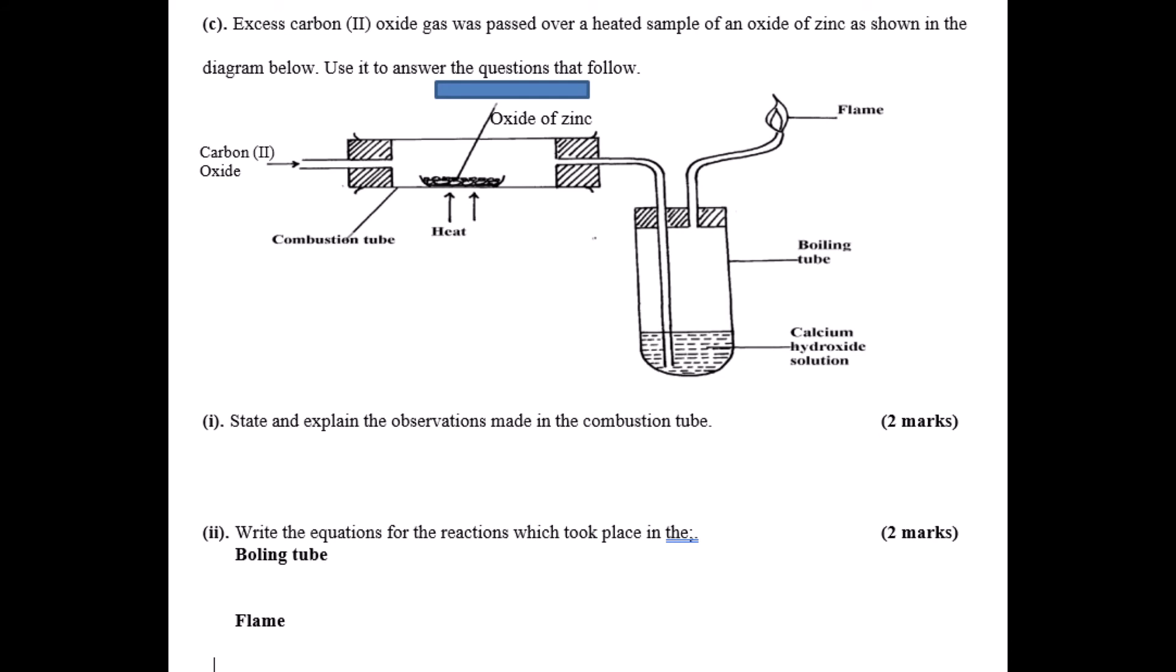Part C: you're given a setup whereby carbon dioxide is passed over heated zinc oxide. The remaining component and product is passed over calcium hydroxide solution, and the remaining gas is burnt. State the role and explain the observation in the combustion tube. Write the equations taking place inside the boiling tube and where the flame is produced.